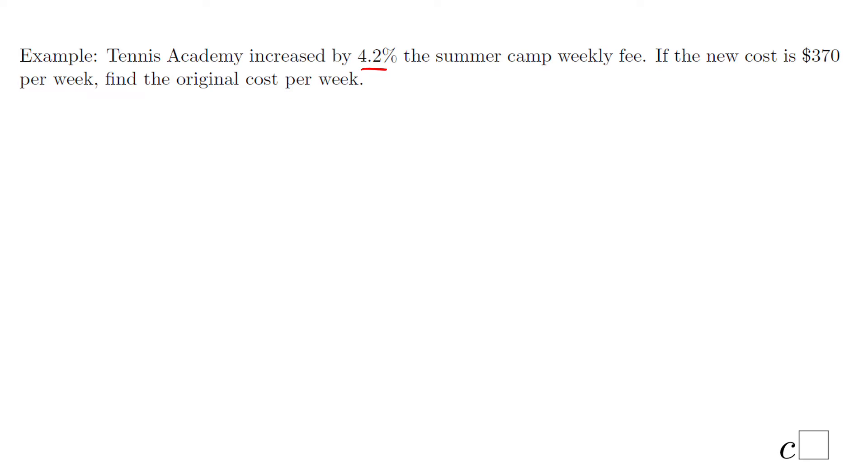Original cost is the thing we need to find out. I'm going to call it x. The new one is $370, and we know this one is 4.2 percent. Now let's use what I tried to emphasize in the first part. This one will be 4.2 over 100 if we change it into a fraction. Of course this one will be the same as 42 over 1000 if we multiply the numerator and denominator by 10. If we simplify this by 2, we end up with 21 over 500.